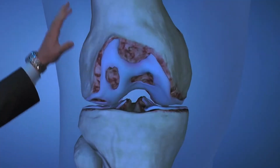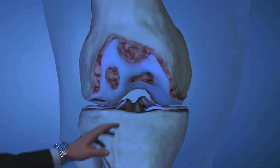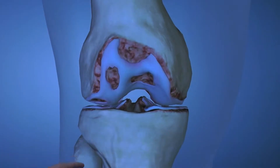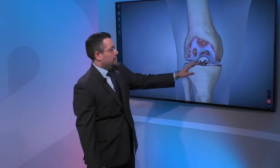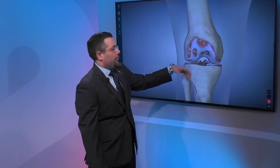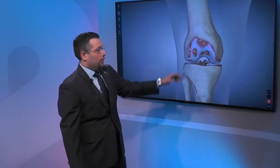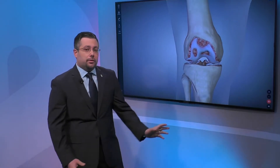What we're looking at here — this is your femur, this is your tibia, your fibula — so you can see that there's definitely significant arthritic wear or loss of cartilage throughout this joint.